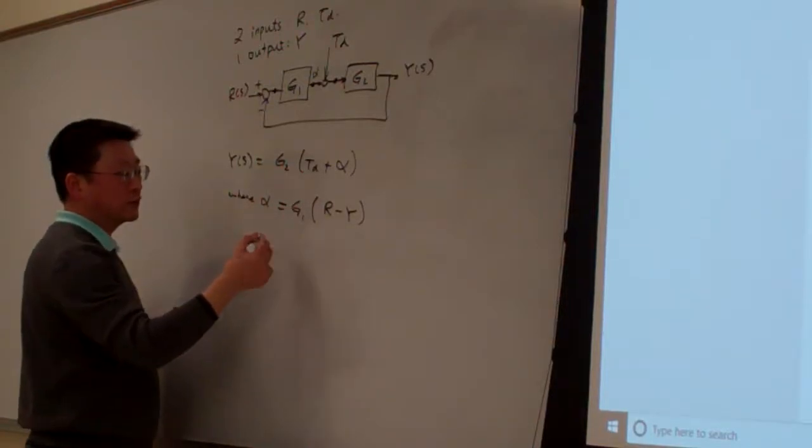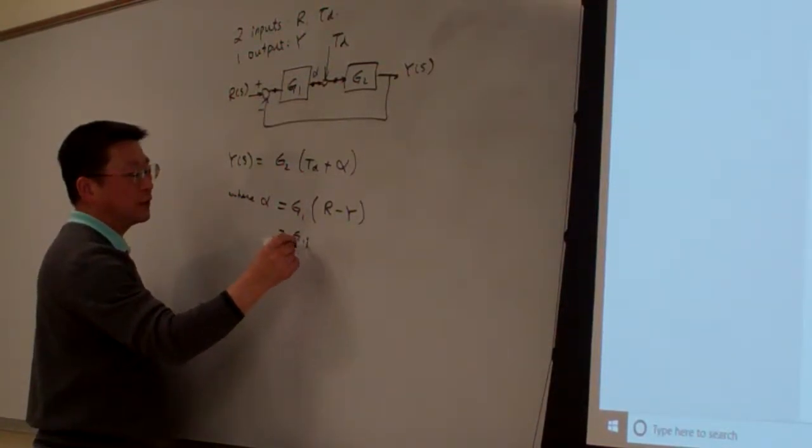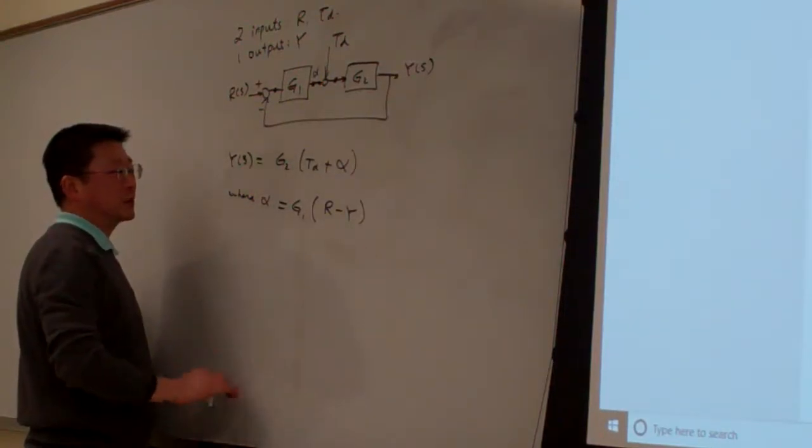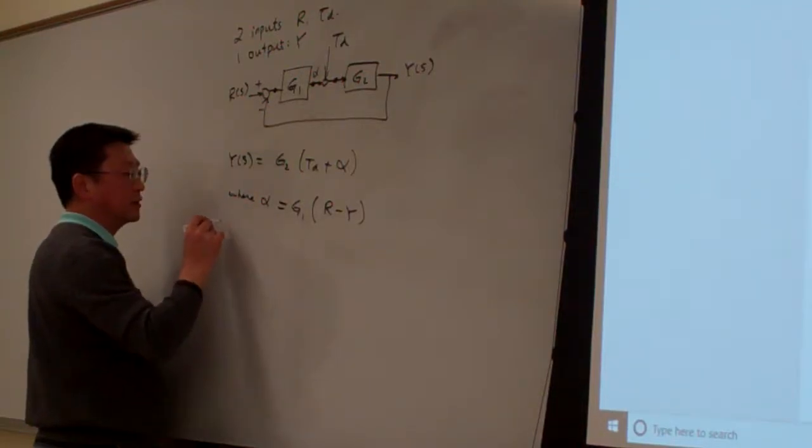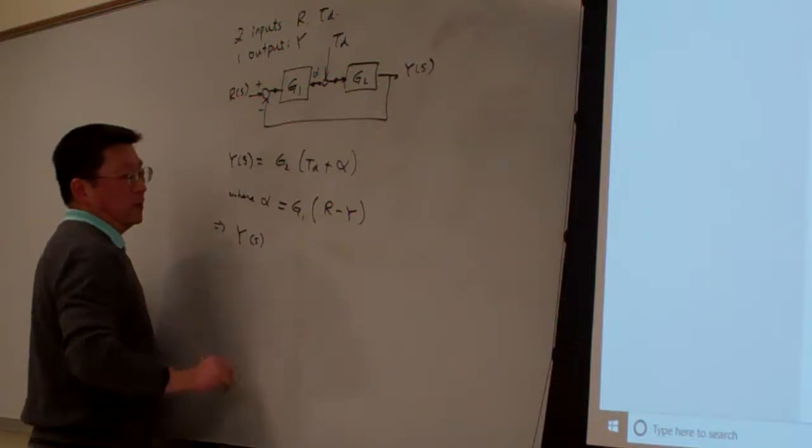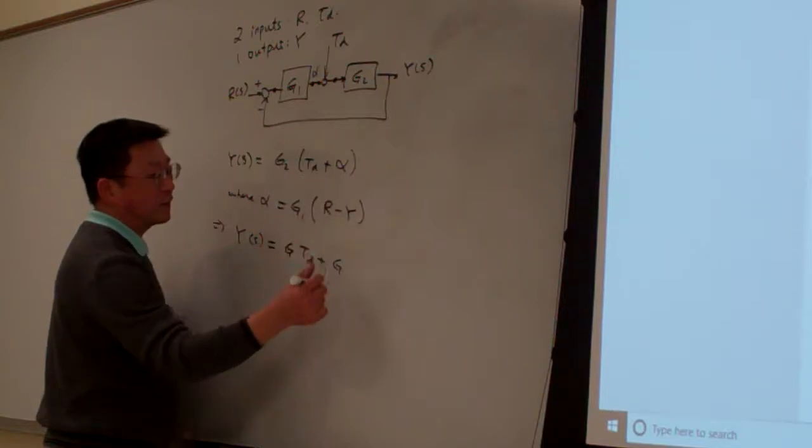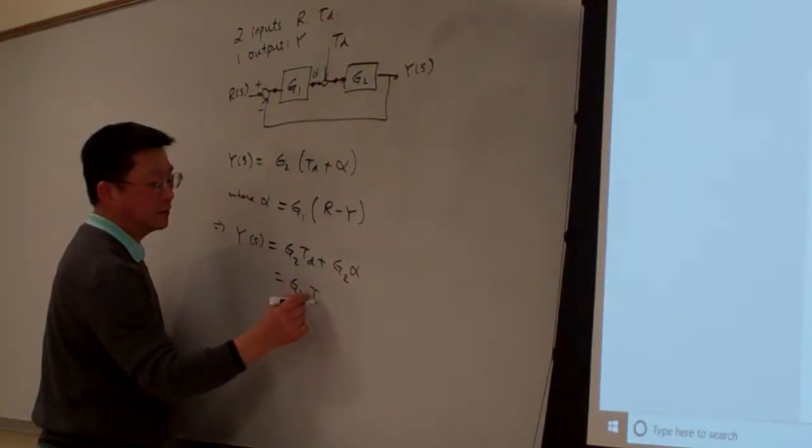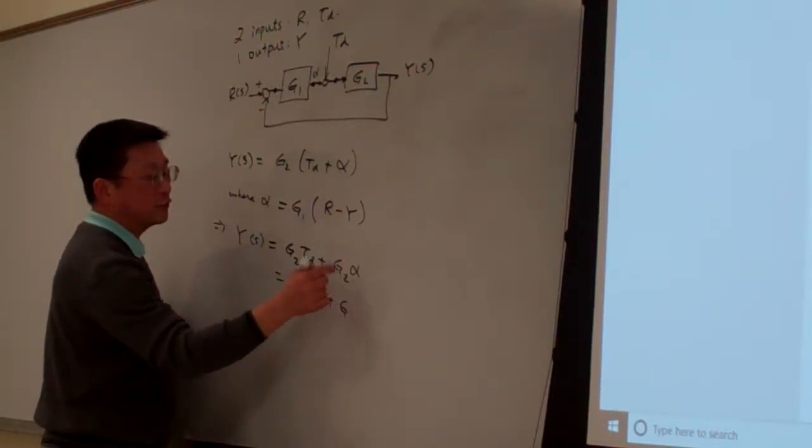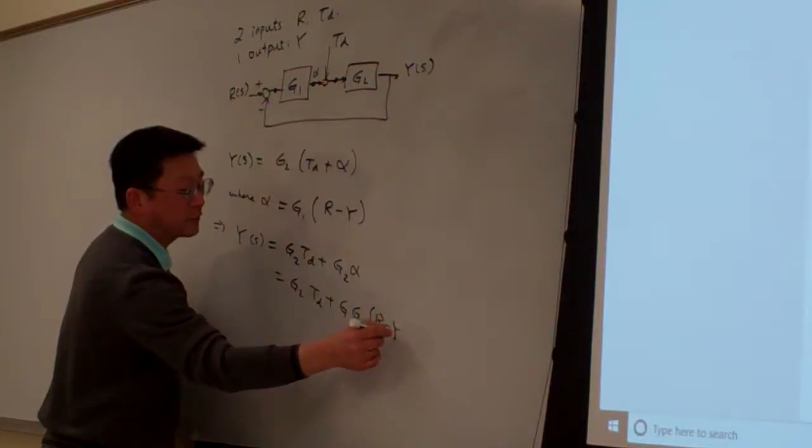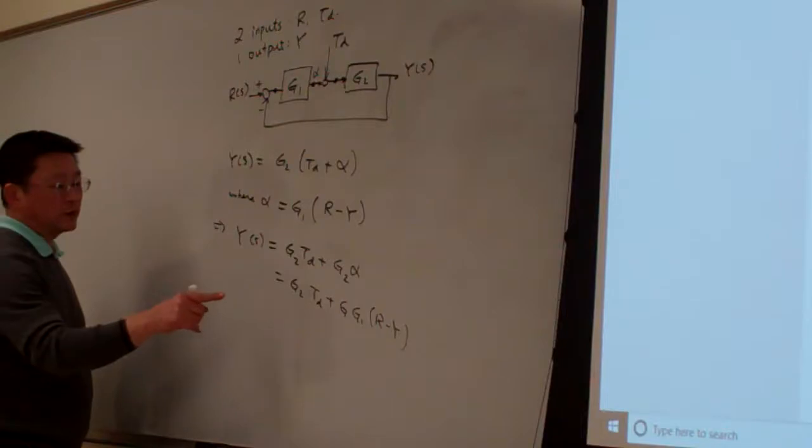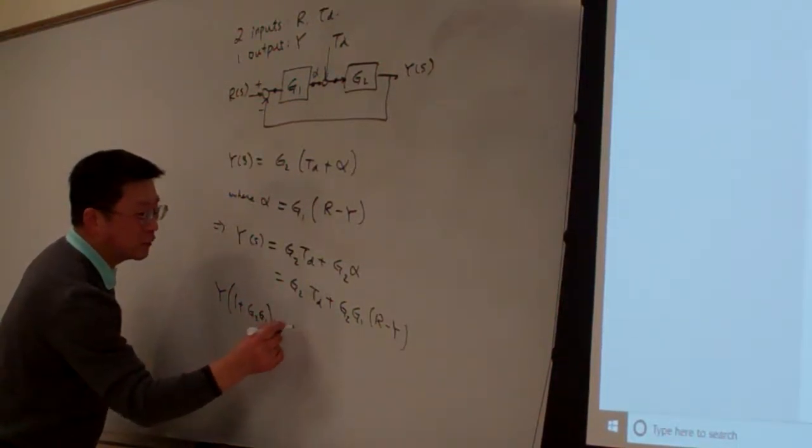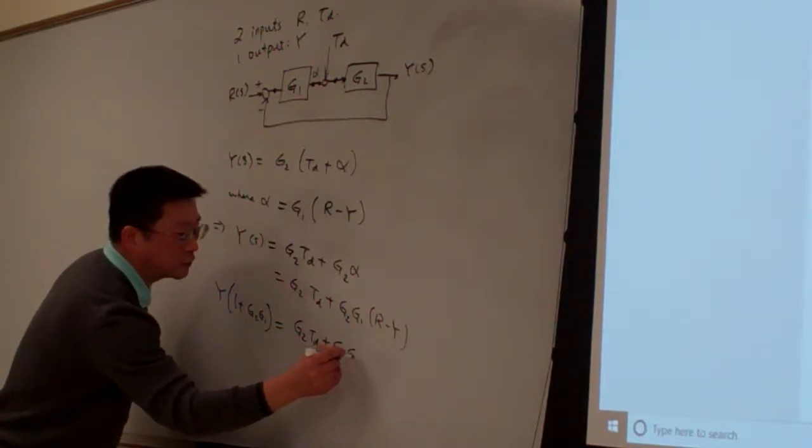Let me figure out what the relation between alpha and Y. That one equal to G1 R minus G1 Y. So let me just plug in. Y will be equal to G2 times Td plus G2 times alpha. Alpha is G1 times R minus Y. By doing this one, let me simplify. Y times 1 plus G2 G1 equal to G2 times Td plus G2 G1 times R.